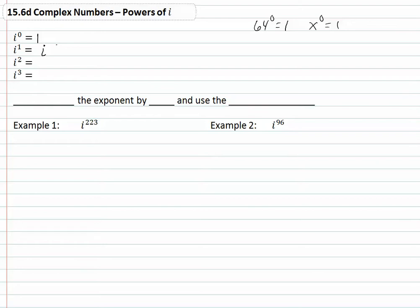i squared, well if you recall what i is, i is the square root of negative one. And if we square it, when we square a square root, we get just what's inside, so it equals negative one.